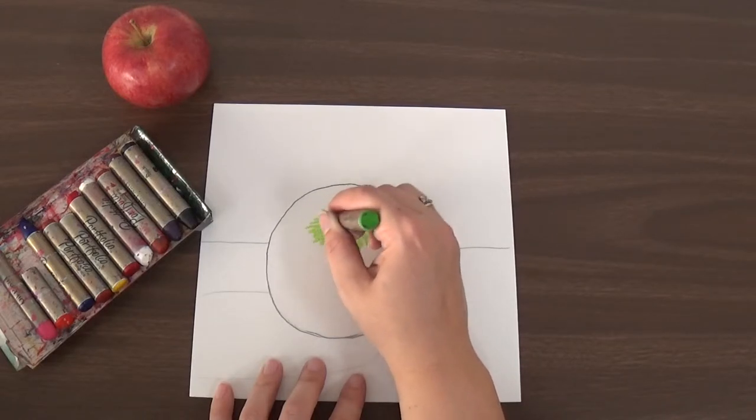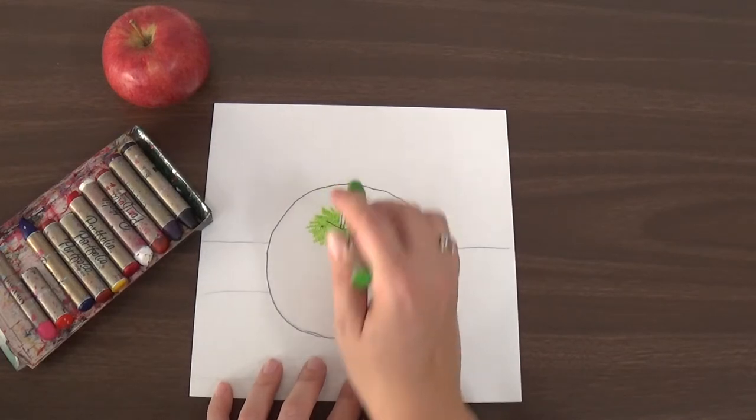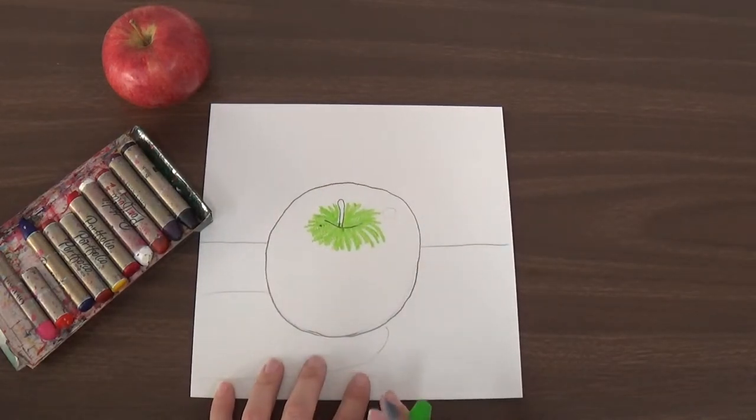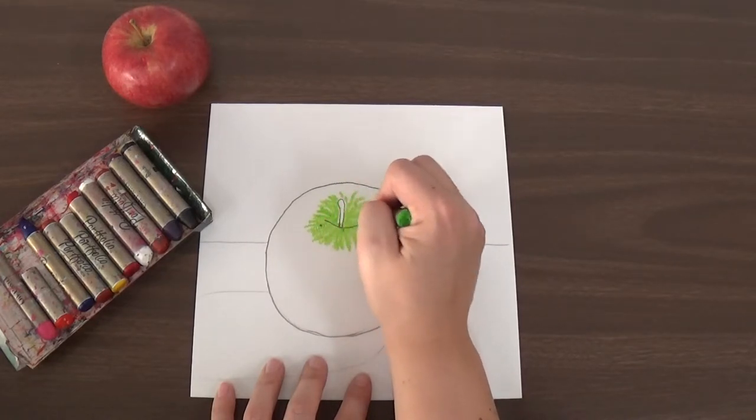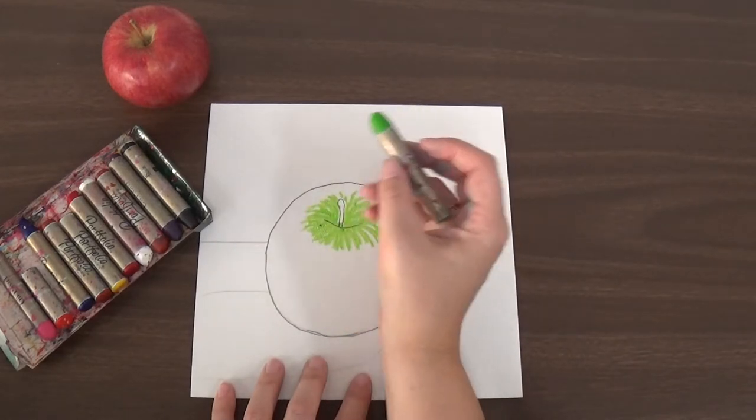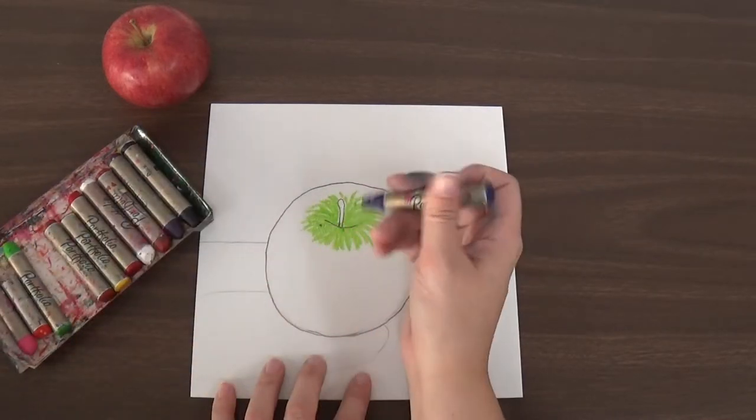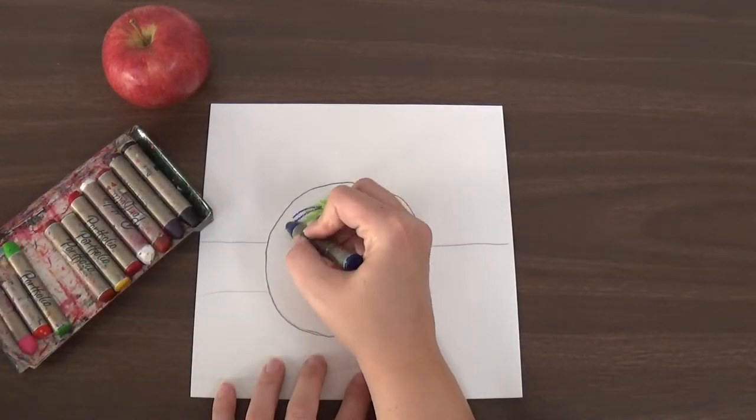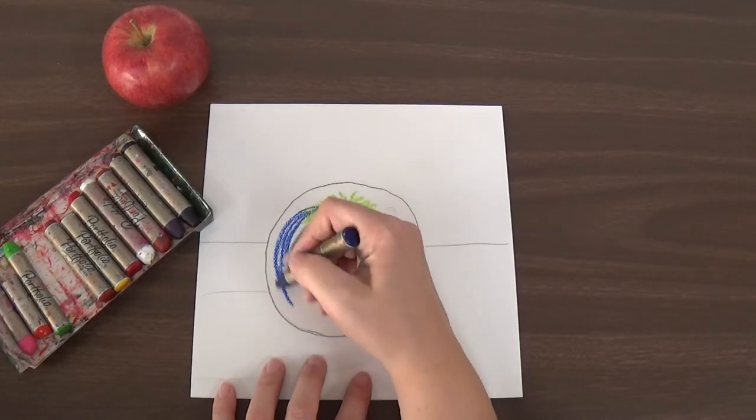And with the oil pastel, it is kind of just like coloring with crayons, only it is a little smoother. So it works a little easier. You can feel it just kind of rolling down on your paper. And then I think I am going to do the rest of my apple blue. So I am going to use blue and I am going to go in and draw my blue parts of my apple.